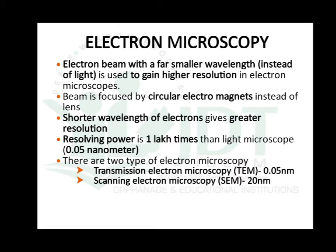As the wavelength decreases, the resolution increases. So a shorter wavelength of the electron gives greater resolution. The resolution power of the electron microscope is approximately 0.05 nanometer, that is 0.05 × 10⁻⁹ meters, and it has a resolving power one lakh times that of a light microscope.